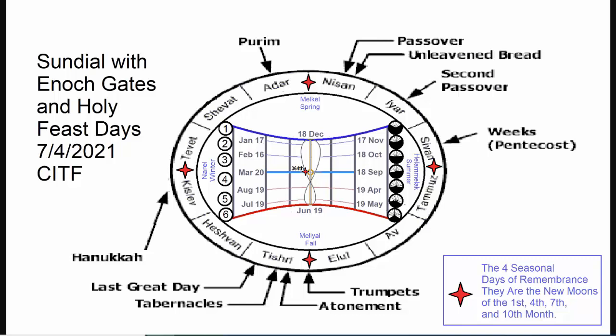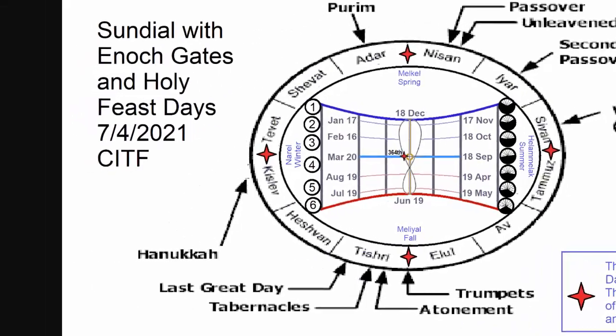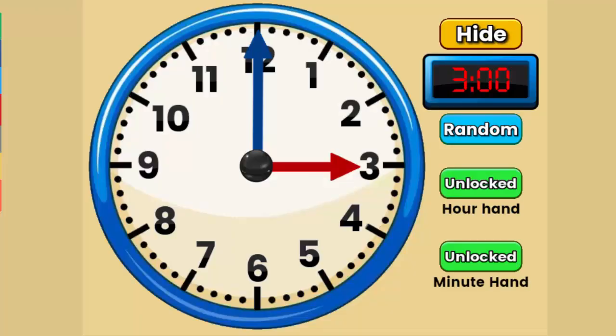We're looking over here at a diagram that I drew up back in about 2021, and we'll be referring back to it. It's kind of a paper representation of how the celestial clock works. But for today's class, we're actually going to use an interactive clock that I found over on the Internet.